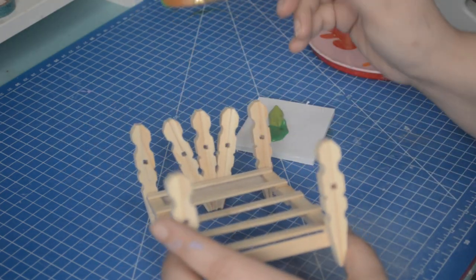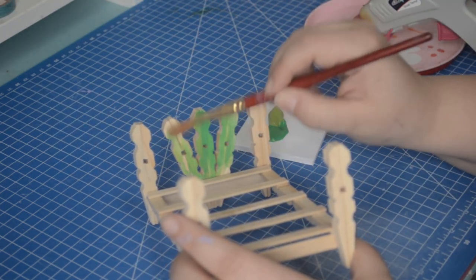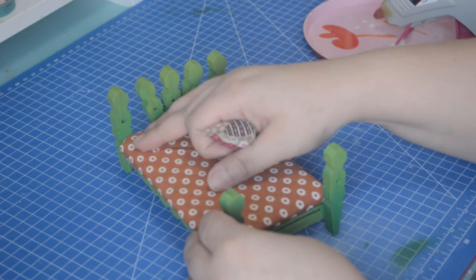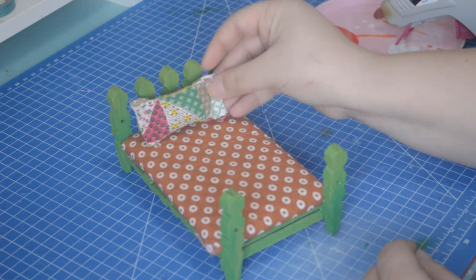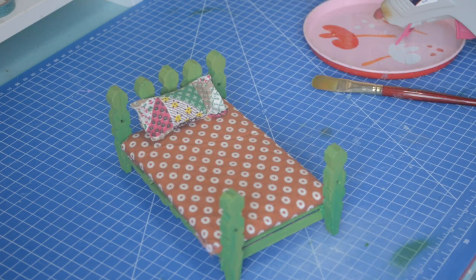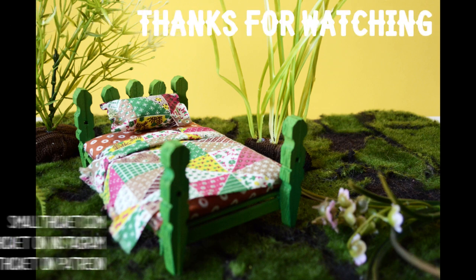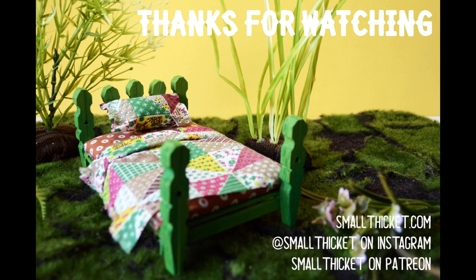All right, construction is done. Let's paint it. I chose two shades of green this time to match my bedding. Once dry, everything is done. I even cut a little square of fabric for a quilt. Doesn't it look great? If you make this project or something inspired by it, be sure to tag me. I'm excited to see what you come up with. Thanks for watching! See you next time!